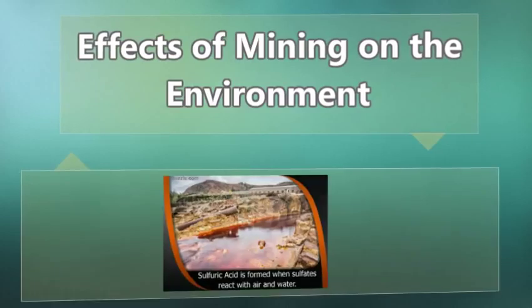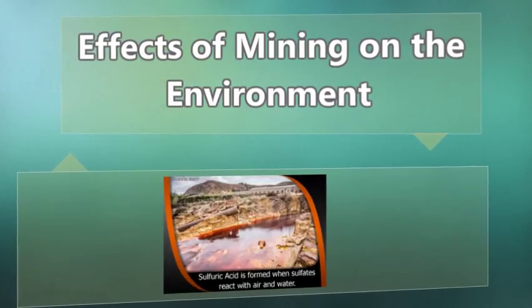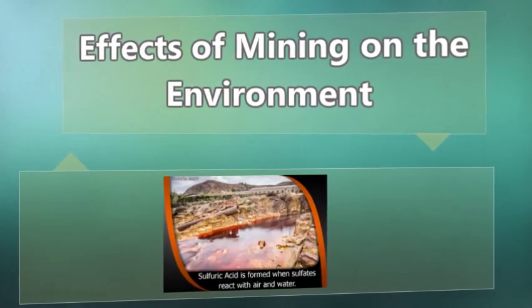Poisonous sulfuric acid is formed when sulfates react with air and water, which is then deposited on land or washed away by water. Many such chemicals are used in mining and conveniently released into water bodies, causing water pollution.